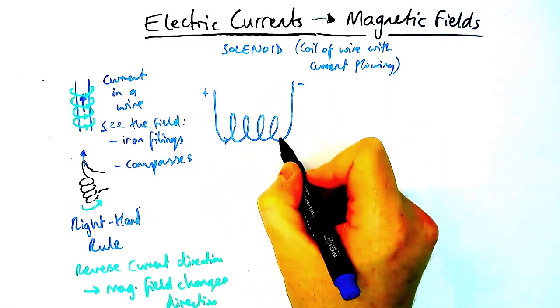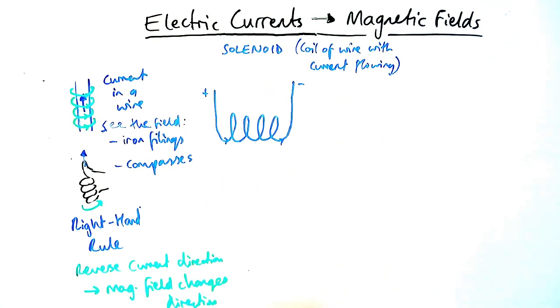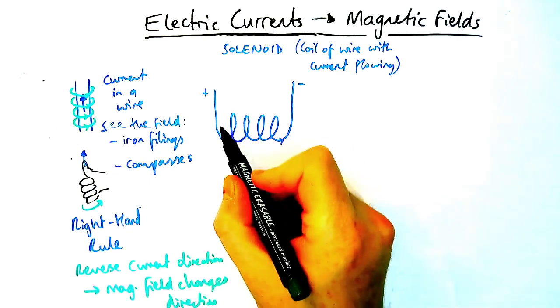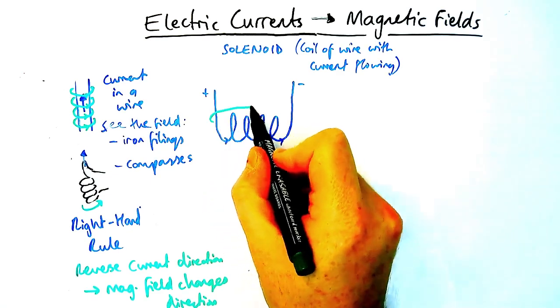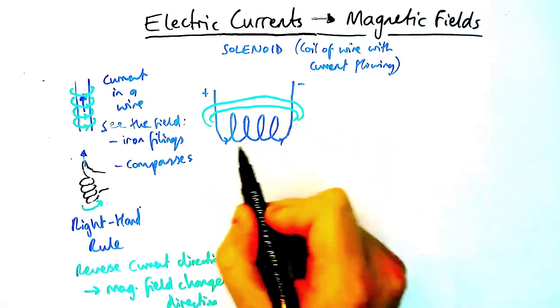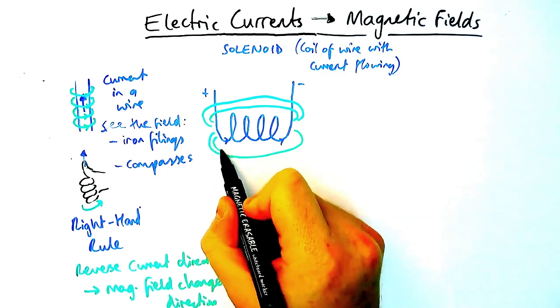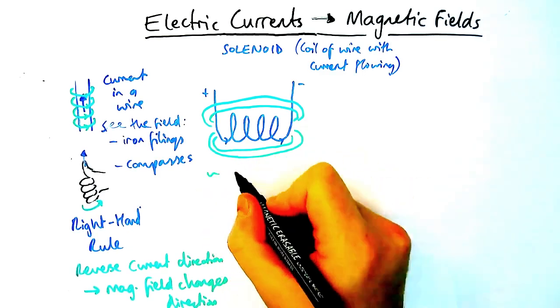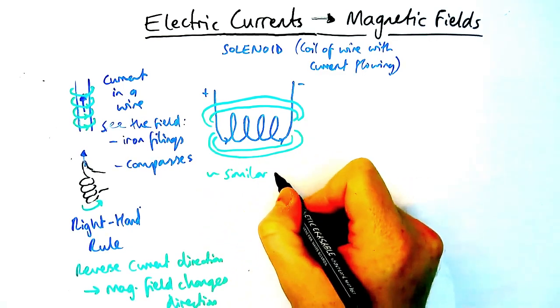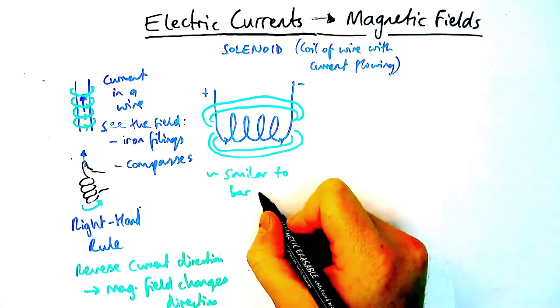When you look at the magnetic field around this coil of wire it forms a very similar shape to a bar magnet. A bar magnet is strongest at the ends so there's more field lines in a smaller area at the ends and then it loops around from one end to the other just like a bar magnet would do.